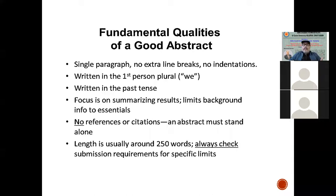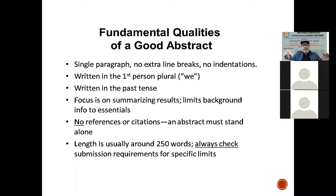Do not write 'I, I, I' repeatedly. Even better, instead of 'we,' simply write 'present paper' — for example, 'present paper highlighted so and so.' This avoids both the first-person singular and plural. Additionally, abstract must be written in past tense — not future tense — because that work is already complete.